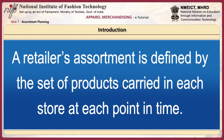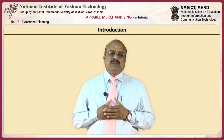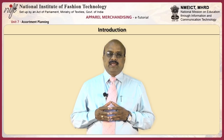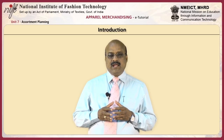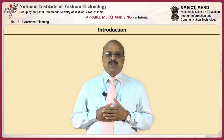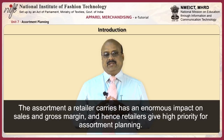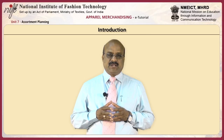A retailer's assortment is defined by the set of products carried in each store at each point in time. The goal of assortment planning is to specify an assortment that maximizes sales or gross margin, subject to various constraints such as a limited budget for purchase of products, limited shelf space for display of products, and miscellaneous constraints such as a desire to have at least two vendors for each type of product. The assortment a retailer carries has enormous impact on sales and gross margin, and hence retailers give high priority to assortment planning. However, no dominant solution has yet emerged for assortment planning.